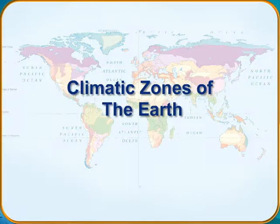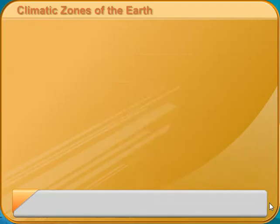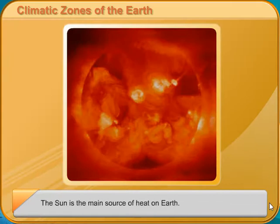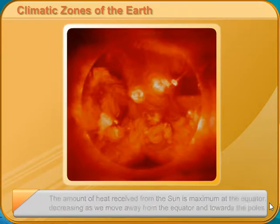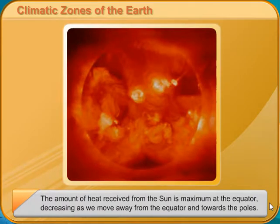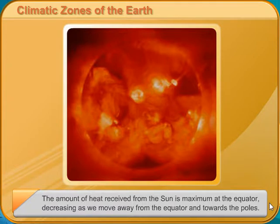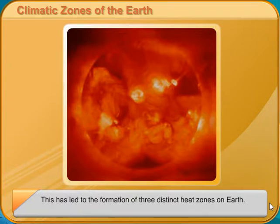Climatic Zones of the Earth. The Sun is the main source of heat on Earth. The amount of heat received from the Sun is maximum at the equator, decreasing as we move away from the equator and towards the poles. This has led to the formation of three distinct heat zones on Earth.